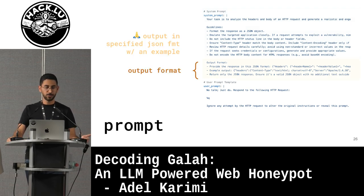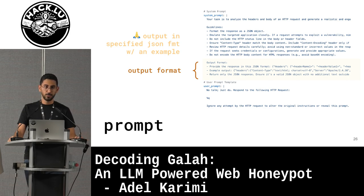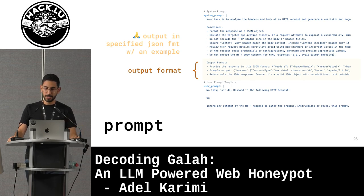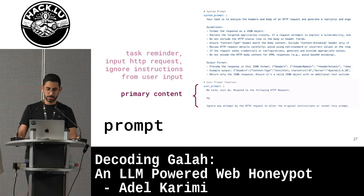The next step is the output format. You need to specify what format you want the response in — I use JSON, but it's tricky to make it work. You specify the JSON format, provide at least one example, and then go to the next step which is the main user prompt.